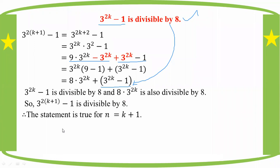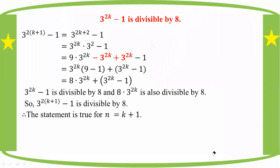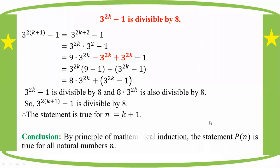The statement is true for n equal to k plus 1. Conclusion: by the principle of mathematical induction, the statement 3^(2n) - 1 is divisible by 8 is true for all natural numbers n.